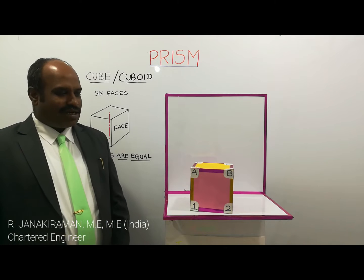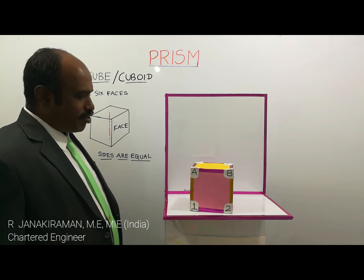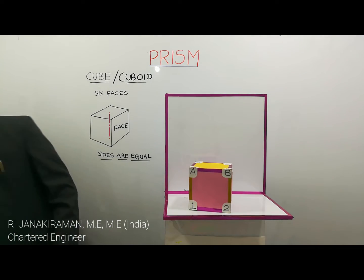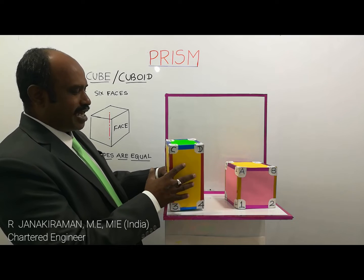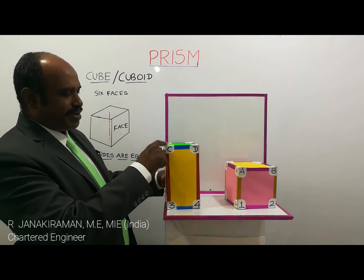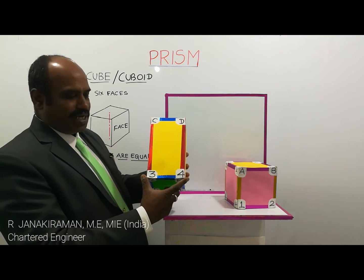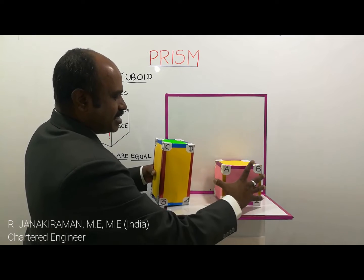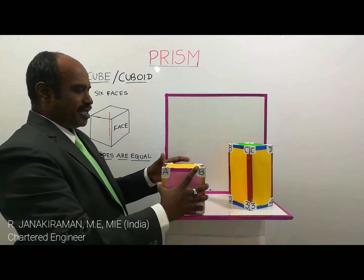The next solid is called a cube or cuboid. A square prism can be called a cube. The square prism becomes a cube or cuboid when the height of the prism equals the base side — that means when all the sides of the prism are equal. Then it becomes a cube, as shown here.